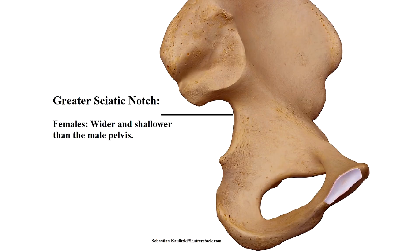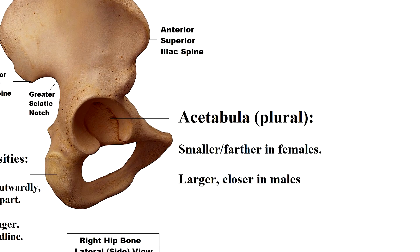Next, the greater sciatic notch is going to be wider and shallower in the female pelvis as compared to the average male pelvis. Next, we have the acetabula. As I discussed in my last video on the pelvic bones, this is the little cup that receives the head of the femur. These are going to be smaller and farther apart in females, whereas men are going to have larger acetabula that are closer together.